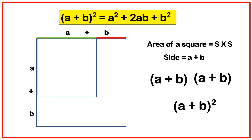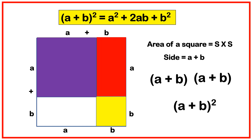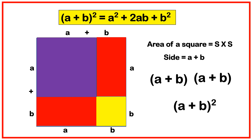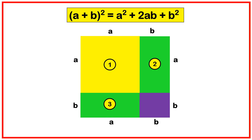Now construct another square with side a, and then construct one more square with side b. This gives a rectangle with dimensions b by a, and one more rectangle with b by a. In the bigger square, we have constructed two squares and two rectangles — the square is divided into four parts.